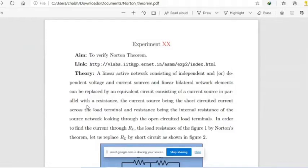That network can be replaced by a current source in parallel with the resistance. That current source is short circuit current and that resistance is internal resistance across some open circuit terminal.